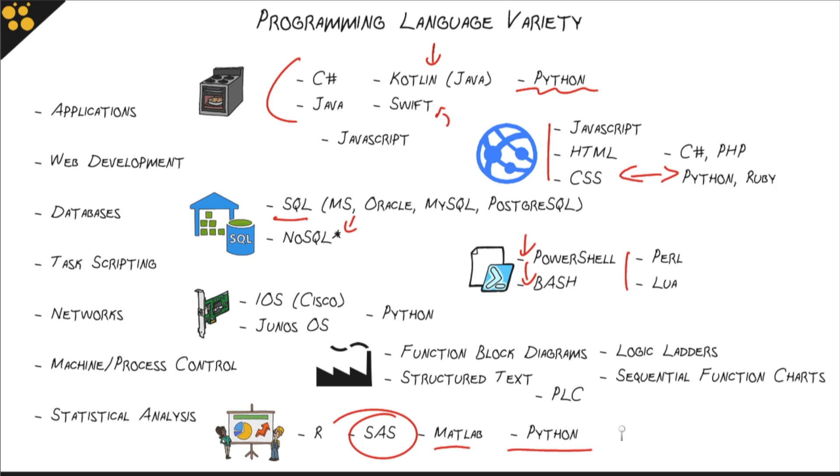All of these languages, to some extent or another, can be used across many different categories that I've identified here. We're not limited to just doing one thing with one language in one area. For instance, like we saw with Python or C#, languages can show up in a lot of different places to accomplish a lot of different goals.